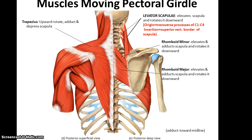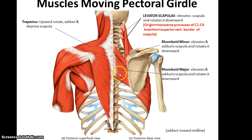Let's start with muscles that move the pectoral girdle. In this image we can see four versions. We have the trapezius, this large muscle in the back that will rotate, adduct, and depress the scapula. Then we have two smaller muscles in the back: the rhomboid major, which elevates and adducts the scapula and rotates it downward, and the rhomboid minor, which is superior to the rhomboid major and also elevates and adducts the scapula and rotates it downward.